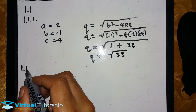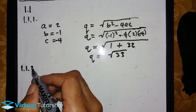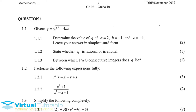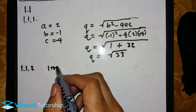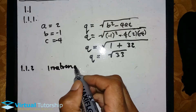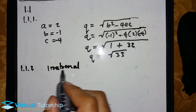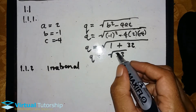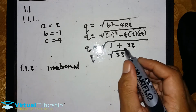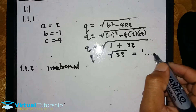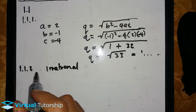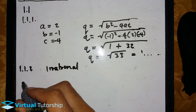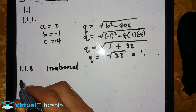Now question 1.1.2 — state whether Q is rational or irrational. The square root of 33 is an irrational number. It's not going to be a perfect decimal number, and those non-terminating decimal numbers are classified as irrational numbers.